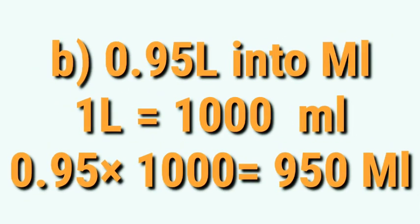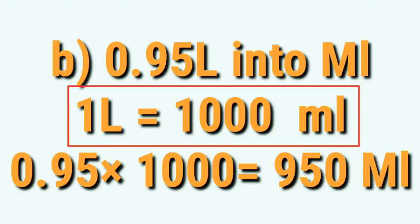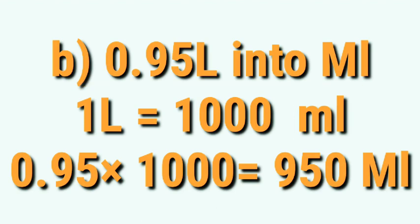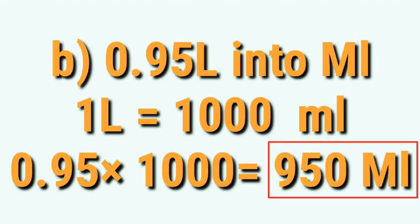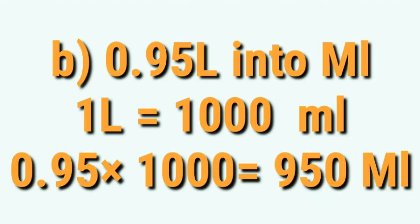Similarly, 0.95 liters — convert into milliliters. We are going from a bigger unit to a smaller unit, so we need to multiply. 1 liter equals 1000 milliliters. 0.95 multiplied by 1000 — we shift the decimal 3 places. Here there are only 2 digits, so we add a zero to make it 3 digits. The answer is 950 milliliters. This is the final answer.